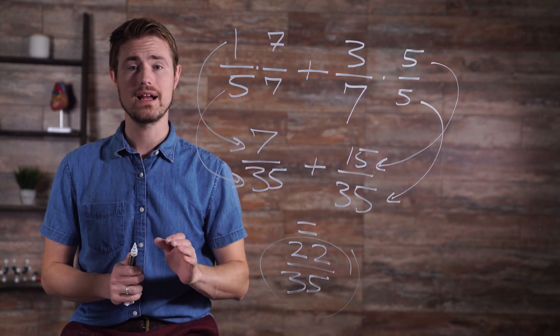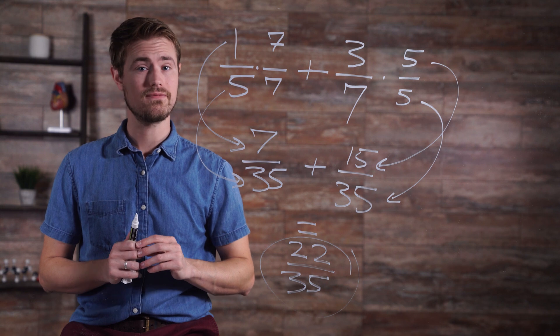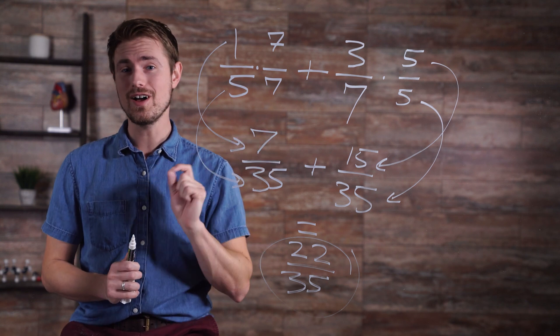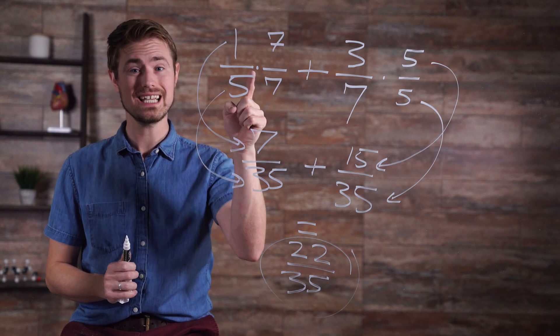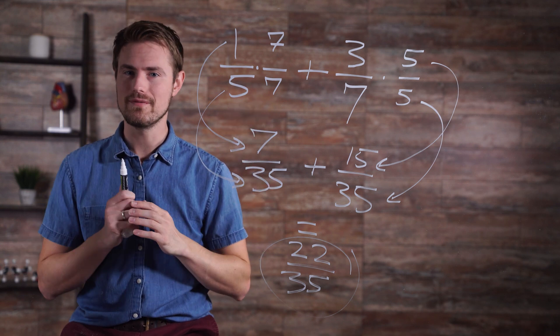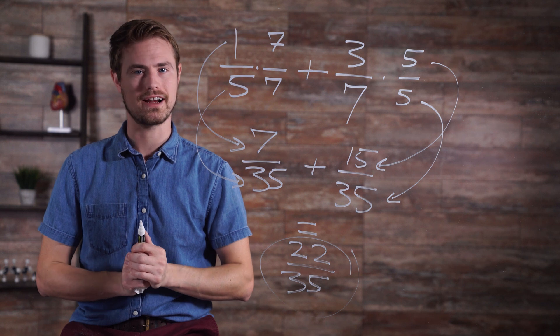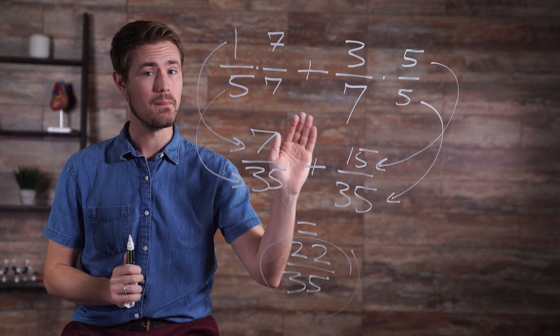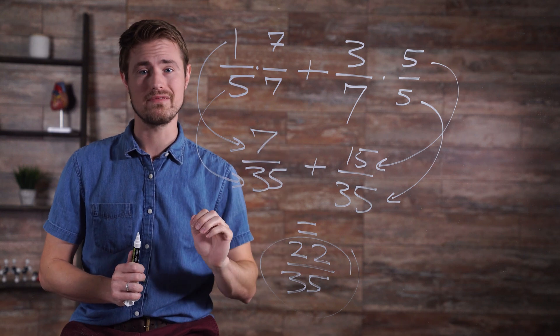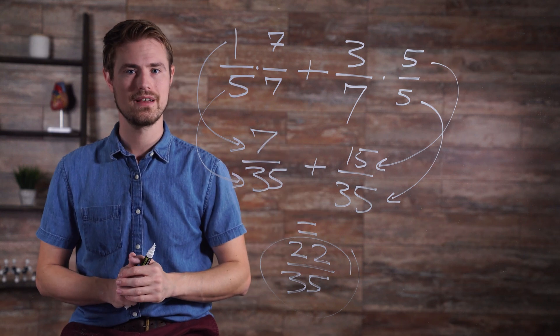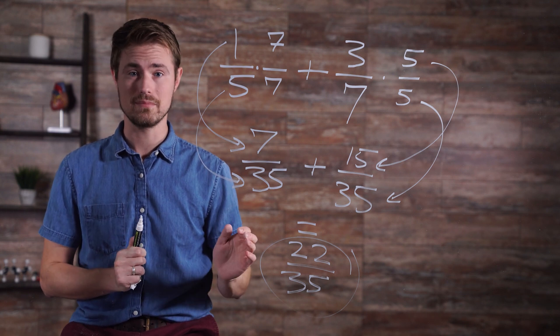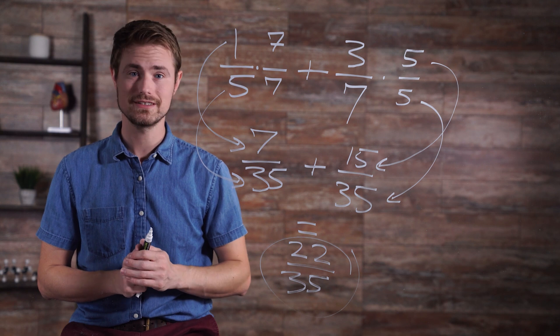We need to multiply the first denominator by 7 to get 35, but we must also multiply the numerator by the same value because we have simply created an equivalent fraction to allow us to add. Likewise, the second expression must be multiplied by 5 over 5 in order to create 35 in the denominator. After these adjustments are made and the denominators are the same, simplify the numerators.